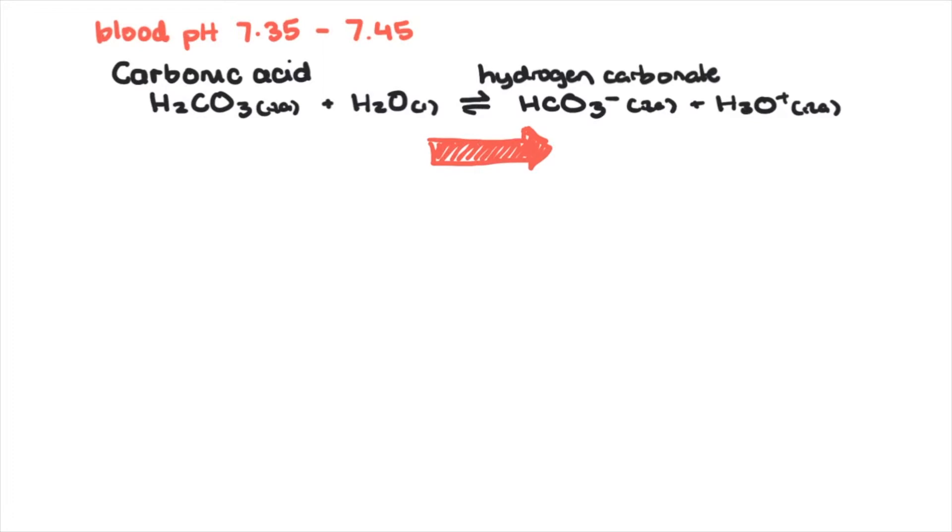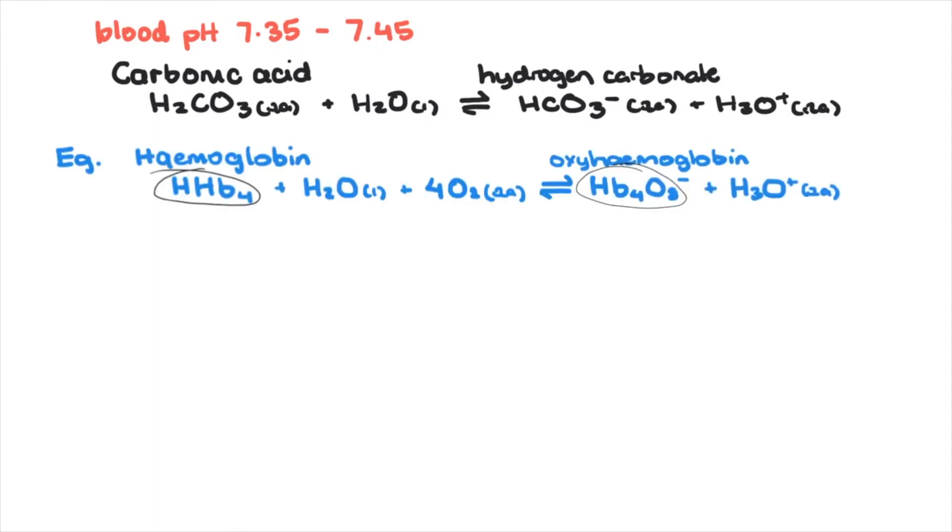Let's look at the biochemistry behind it. The blood buffer system is linked to the hemoglobin-oxyhemoglobin equilibrium that's used to maintain blood pH. Hemoglobin, the protein responsible for binding oxygen, is a bluish-red color and reacts with oxygen in the blood in an equilibrium reaction producing oxyhemoglobin and hydronium ions.